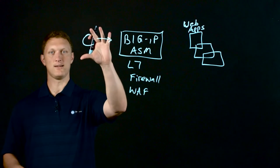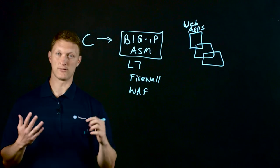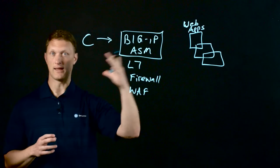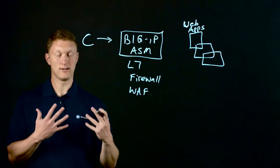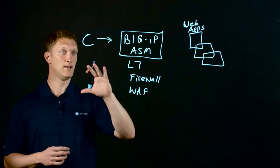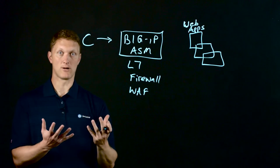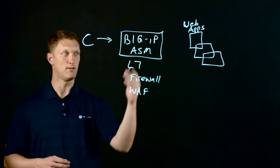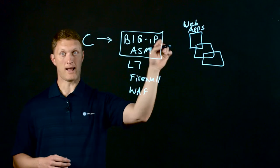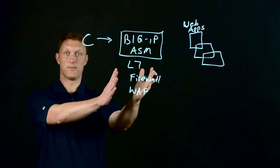Some of these attacks that we see today, like Slow Loris or maybe HTTP flood, or some of these layer seven attacks, are legitimate HTTP requests. A traditional firewall is not going to block those kinds of requests. But nonetheless, you could get DDoS attacked by those very legitimate-looking requests. That's why you need a firewall in front of all your web applications, because this firewall is going to stop the bad requests from reaching your applications.